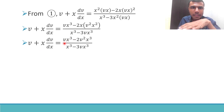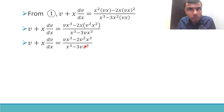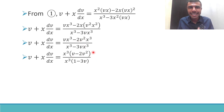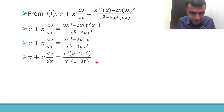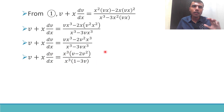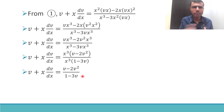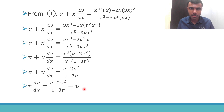Now in the numerator I can take x³ common, and in the denominator also I can take x³ common. Taking x³ common from the numerator gives x³(v minus 2v²), and from the denominator x³(1 minus 3v). This x³ and that x³ cancel out, so I'm left with (v minus 2v²)/(1 minus 3v). Now I want to bring this v from the LHS to the RHS, so x·dv/dx equals (v minus 2v²)/(1 minus 3v) minus v.